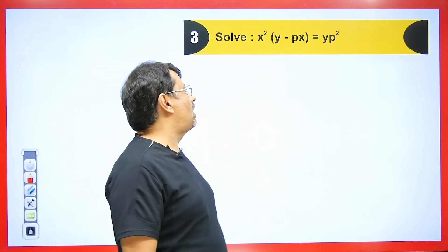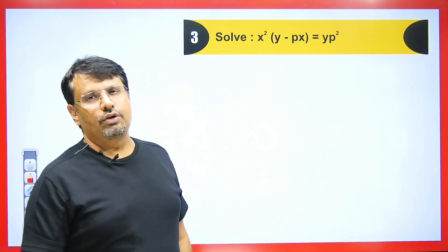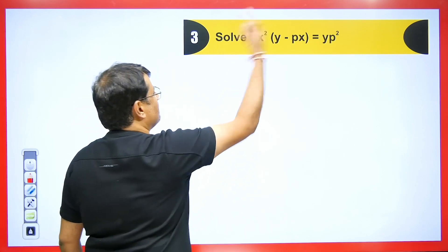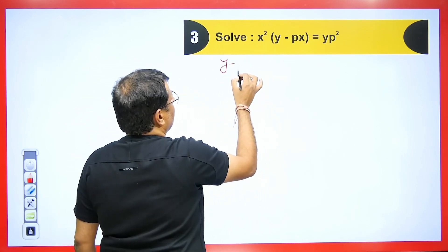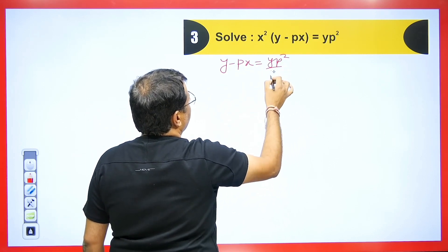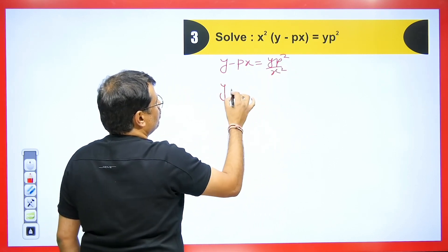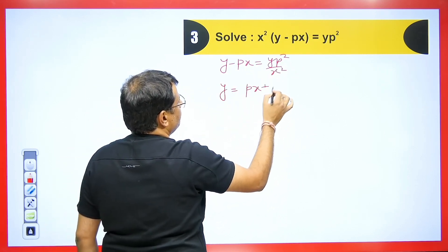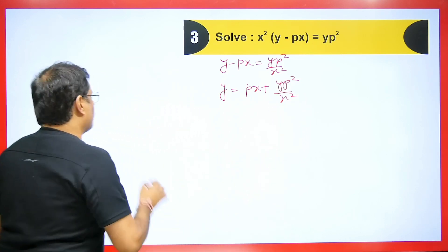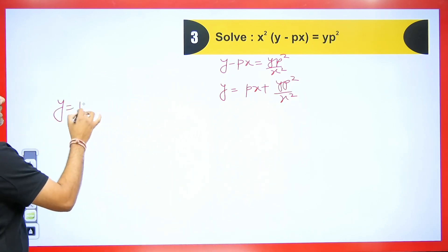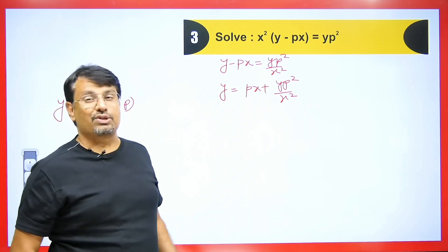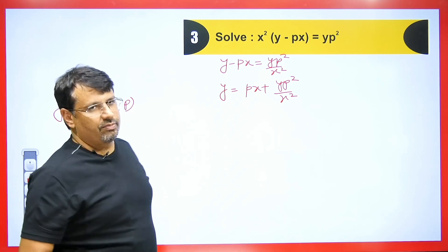The equation given is x²(y - px) = yp². To convert this into Clairaut's form, first divide by x², giving y - px = yp²/x². Taking px to the other side: y = px + yp²/x². This is not in Clairaut's form because y and x still appear in the function part — it should be px plus a function of p only, so we need to remove y and x from that term.